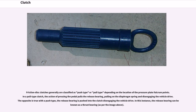Friction disc clutches are generally classified as push type or pull type depending on the location of the pressure plate fulcrum points. In a pull type clutch, pressing the pedal pulls the release bearing, pulling on the diaphragm spring and disengaging the vehicle drive. The opposite is true with the push type — the release bearing is pushed into the clutch, disengaging the vehicle drive. In this instance, the release bearing can be known as a thrust bearing, as shown in the image.